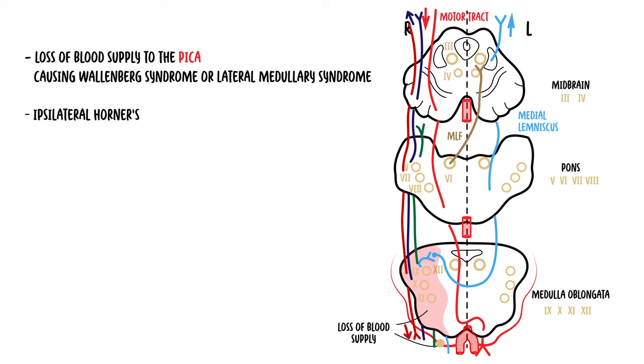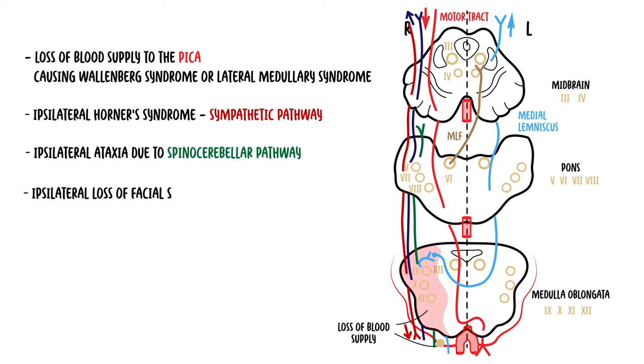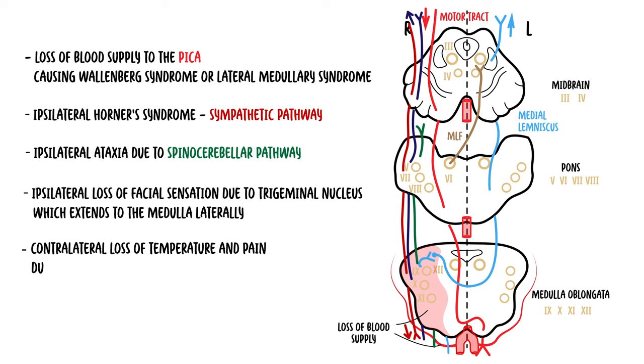It causes ipsilateral Horner's syndrome due to the sympathetic pathway lesion, ipsilateral ataxia due to spinocerebellar pathway, ipsilateral loss of sensation of the face due to trigeminal nuclei which extends to the medulla laterally, contralateral loss of temperature and pain due to spinothalamic involvement, and dysarthria and dysphagia due to disruption of cranial nerve 9 and 10. This syndrome is lateral because all the lateral structures are affected.